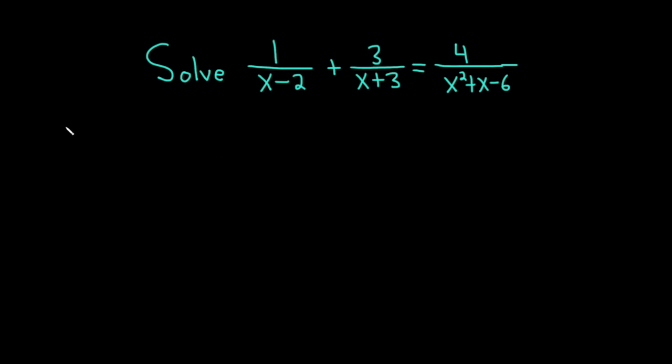Let's carefully work through this solution. Let's start by writing down the equation one more time. So on the left hand side we have 1 over x minus 2 plus 3 over x plus 3.